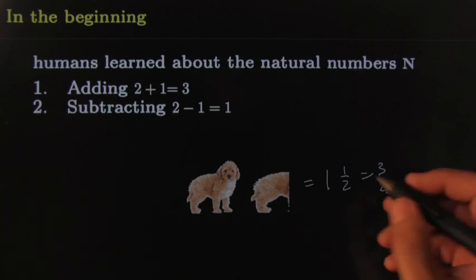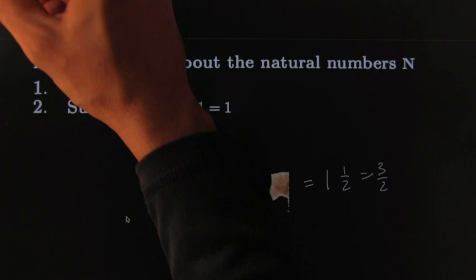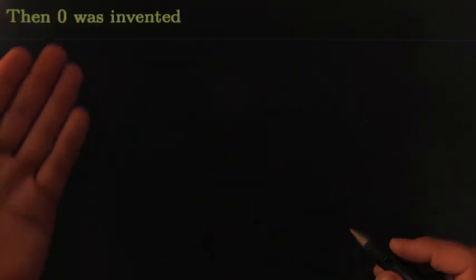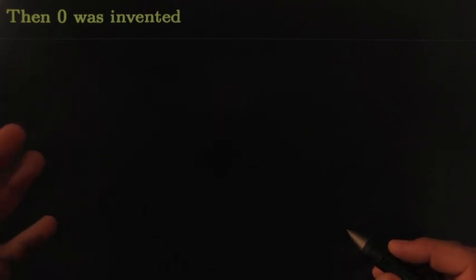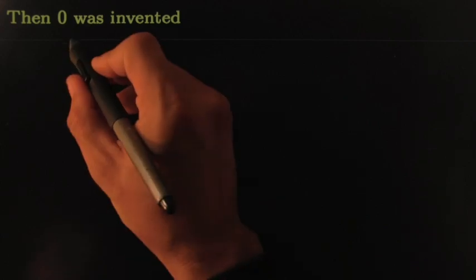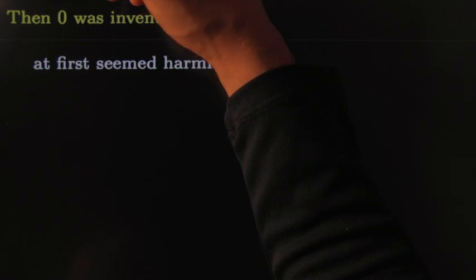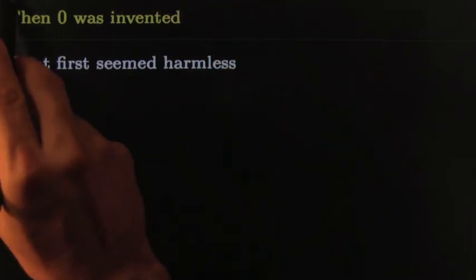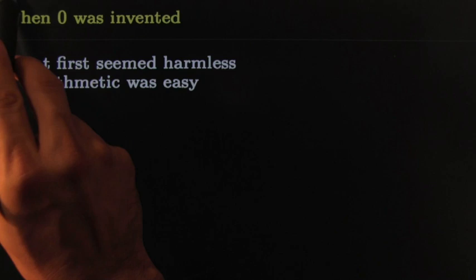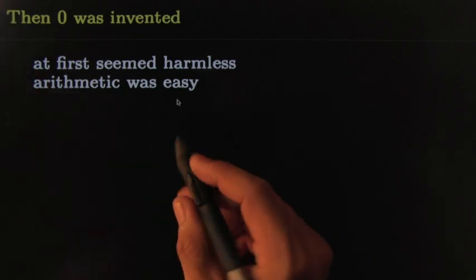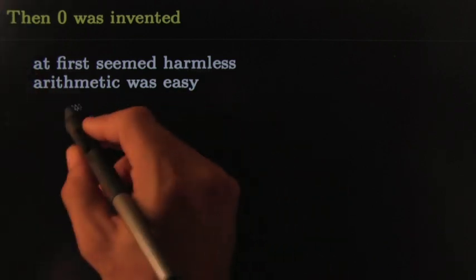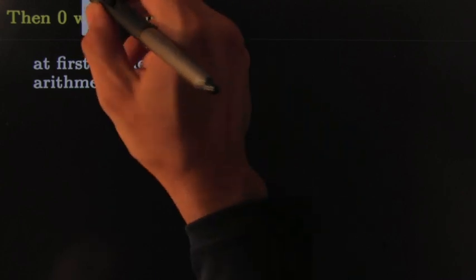But then guess what happened — the crazy little number zero was invented. All the dogs were gone, and now zero had to be dealt with. Things started to get interesting, because now, although it seemed harmless at first, it started to get a little bit tricky.